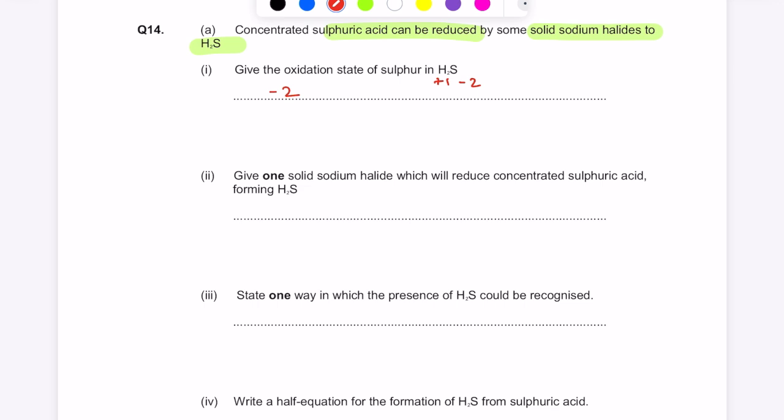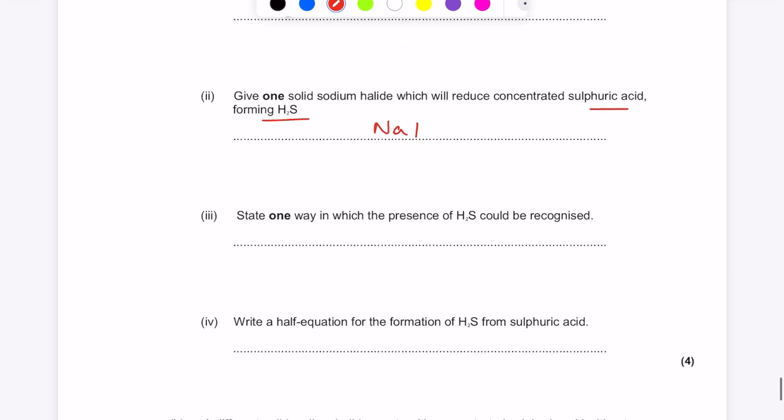Give one solid sodium halide which will reduce concentrated sulfuric acid, forming H2S. Remember, it's the elements that sit lower in that group, which have a stronger reducing power. So NaI is a good answer here. State one way in which the presence of hydrogen sulfide could be recognized. Remember, it's by its horrible smell of bad eggs.